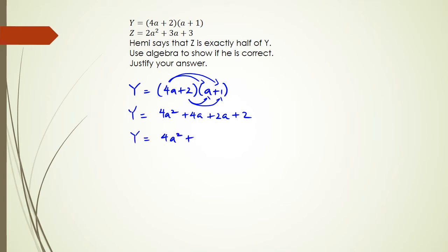Now if we want to find half of Y, we need to take this entire quadratic and divide it by 2. So what we're going to do is 4a squared plus 6a plus 2, and the whole thing divided by 2.